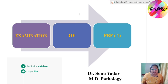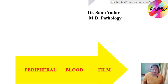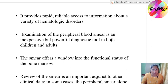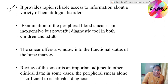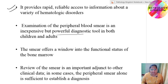Hello friends, I am Dr. Sonu Yadav and today's topic of discussion is examination of PBF, that is peripheral blood film. This lecture is an overview of how to report PBF. Peripheral blood film is a mirror to the bone marrow status — the functional status of the bone marrow. It provides rapid, reliable access to information about a variety of hematological disorders. It is inexpensive but a powerful diagnostic tool, and review of the smear in addition to clinical data sometimes gives enough information to establish a diagnosis.